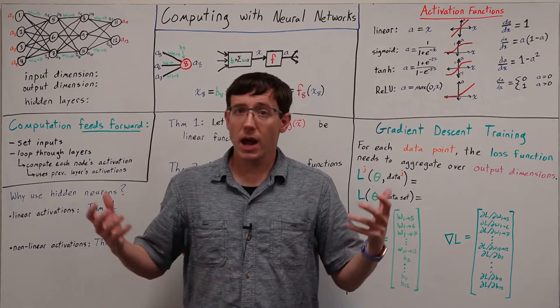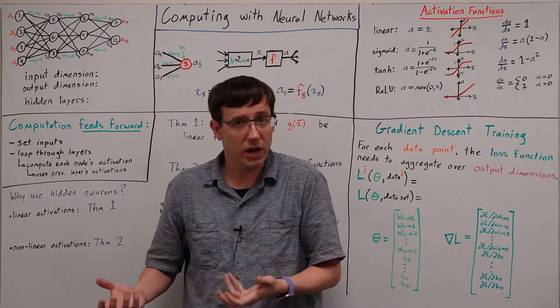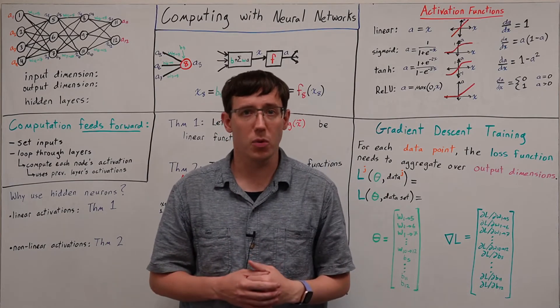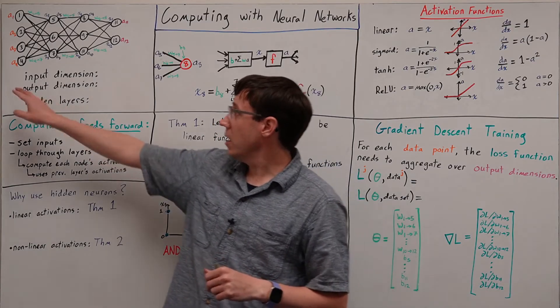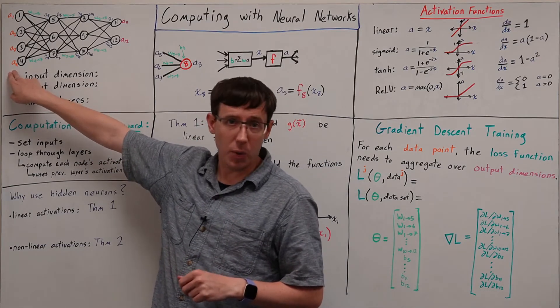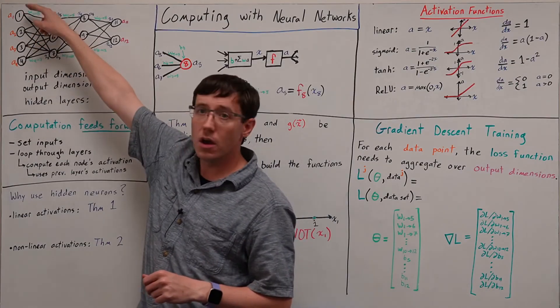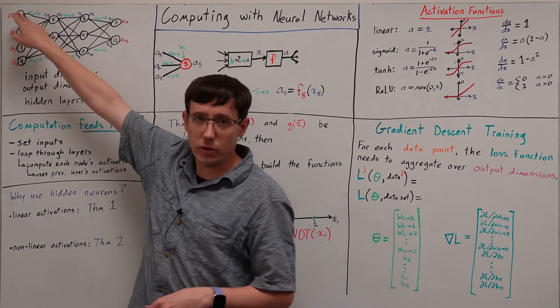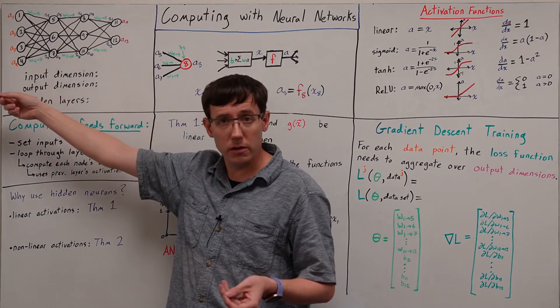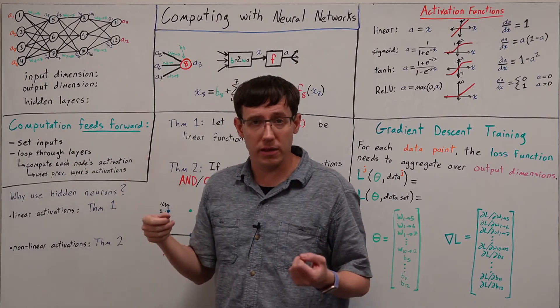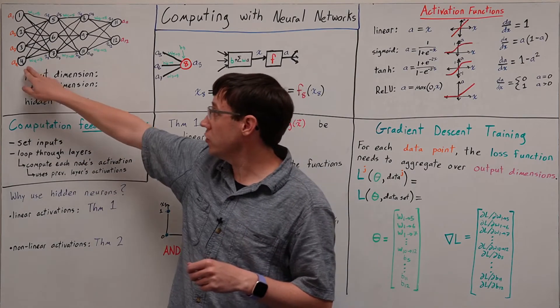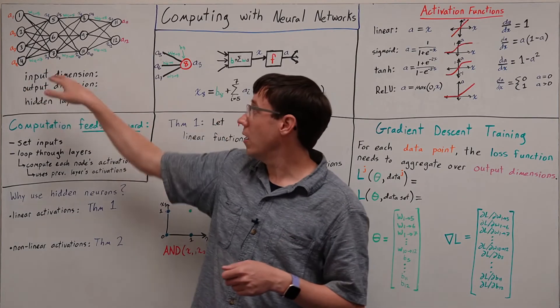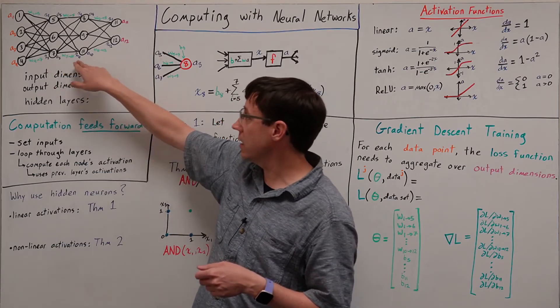So now we want to think about how do we actually perform a computation using a neural network to make a prediction on some data point. Well, we begin by using the data point to set the activations of the input layer to the network. These nodes I've illustrated in the input layer aren't really neurons. They're not computing anything. Instead, they are just storing the values in the input vector.